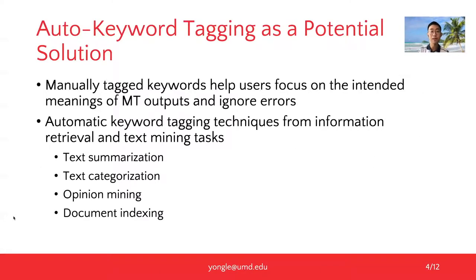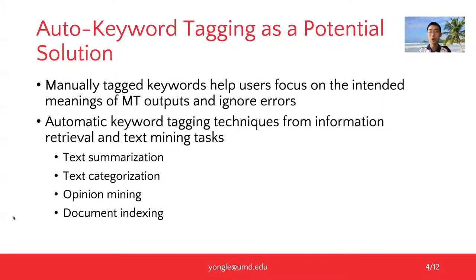We were guided by the previous findings that manually annotated keywords can help users focus on the intended meanings of machine translation outputs and overlook errors. But that will cost a lot of time and human effort. Researchers from text mining and information retrieval have developed several automated keyword tagging techniques, but there is limited attention on applying such techniques on conversation logs.